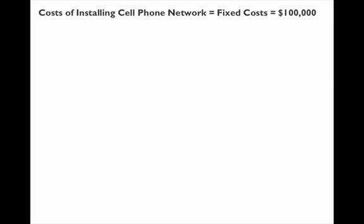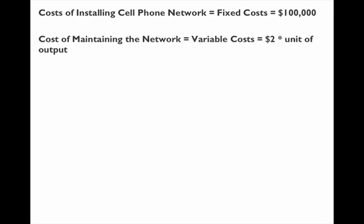After they open the doors, they'll have to continue to pay for this. Now let's say that the cost of maintaining the network, on the other hand, was actually relatively low — $2 times whatever unit of output you have. This will be a variable cost because it's related to output. The more output, the more cost.